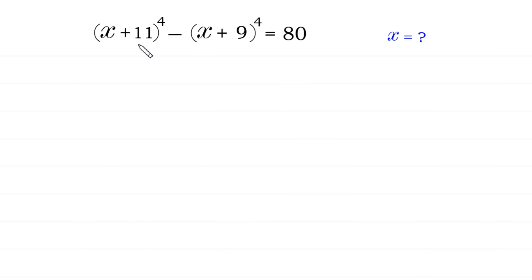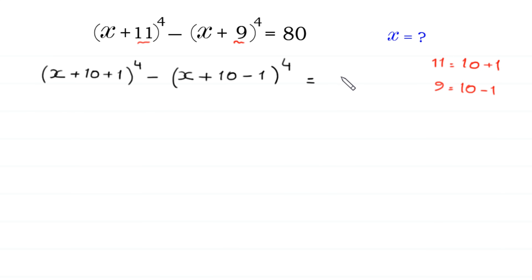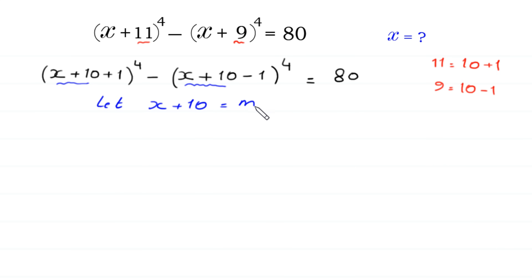First of all, we split this 11 as 10 plus 1, and we split this 9 as 10 minus 1. So the equation becomes: x plus 10 plus 1, whole to the power 4, minus x plus 10 minus 1, whole to the power 4, is equal to 80. Now, here we have x plus 10 in both terms, so we let x plus 10 equal to m and substitute m into this equation.